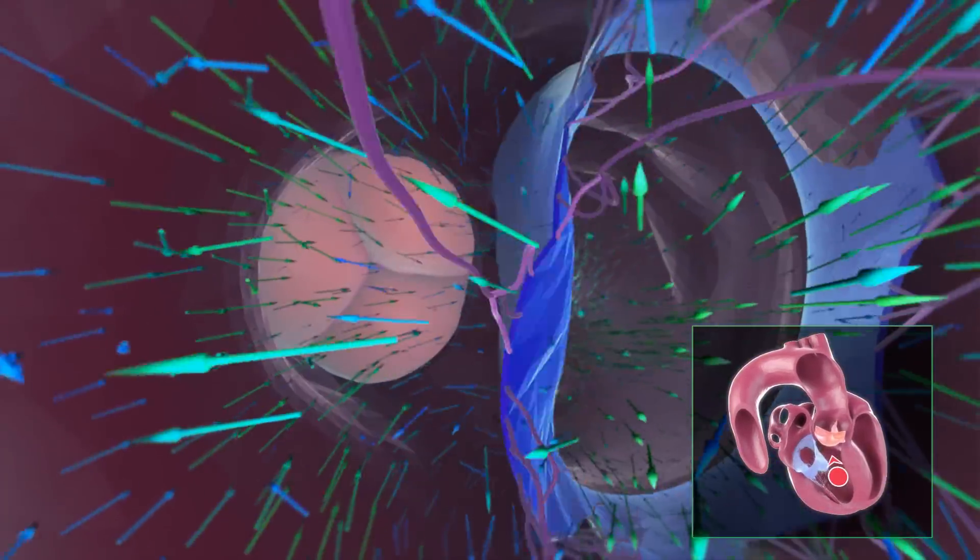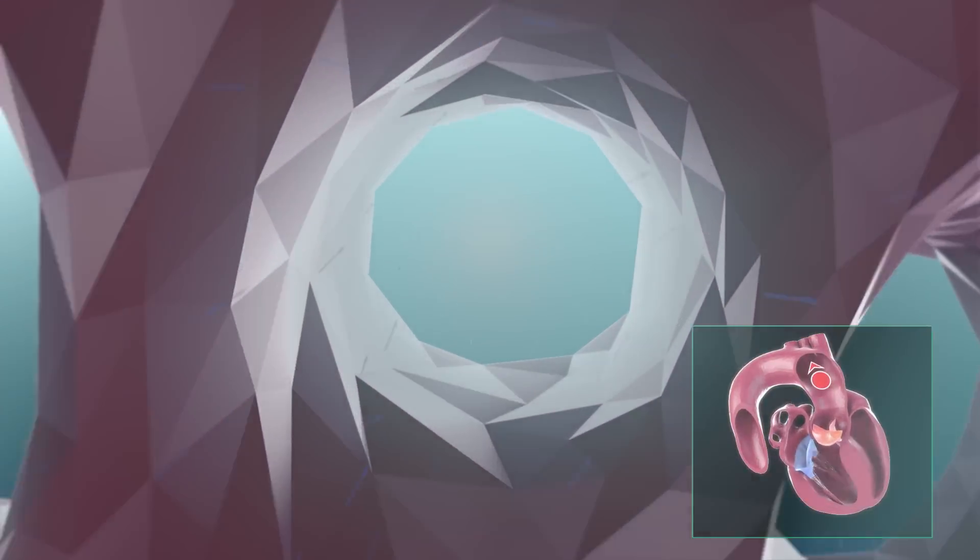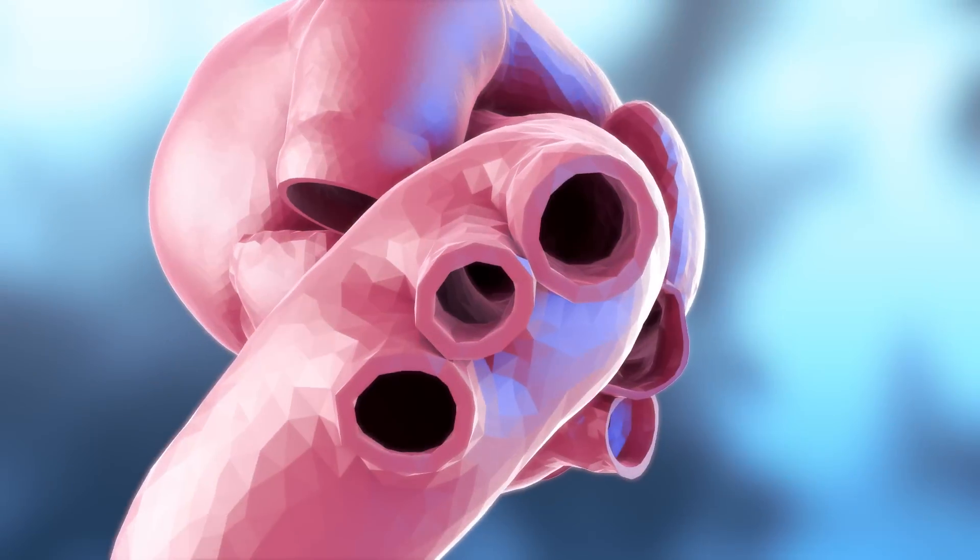The blood strongly pushed out by the left ventricle passes the aortic valve through the aorta to the whole body and carries oxygen and nutrients throughout.